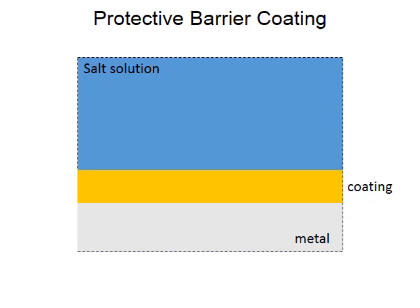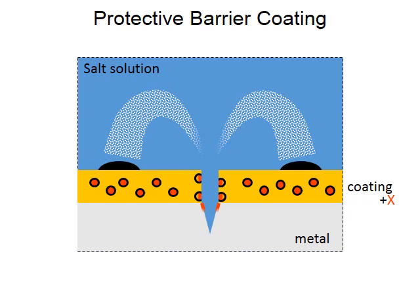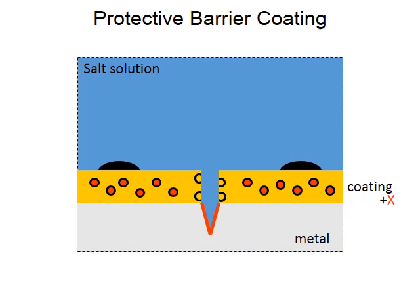We want to prevent this delamination. Our idea is to dope the coating with tiny capsules which contain a corrosion inhibitor. Scratching such a coating will still lead to corrosion at the beginning. However, the release of the inhibitors from the capsules will form a passivation film on the damaged area of the coating and will ideally stop corrosion completely.